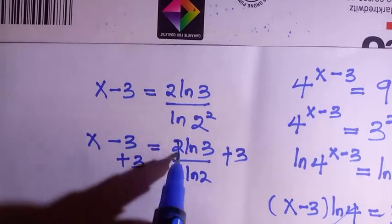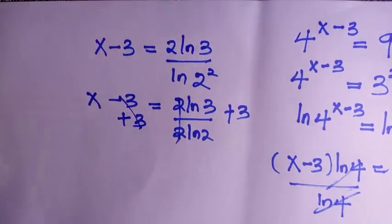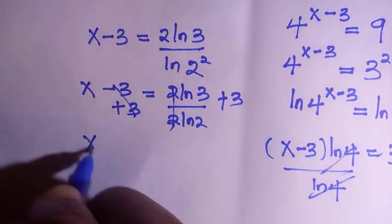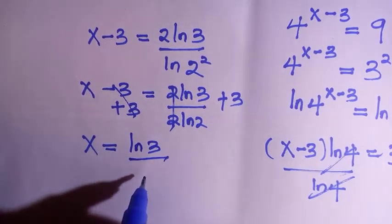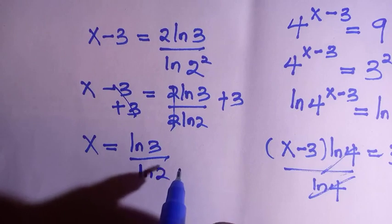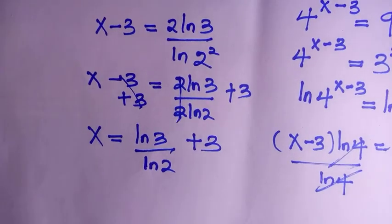So plus 3 minus 3 we cancel, and these two we also cancel. So we have the value of x equals to ln of 3 divided by ln 2 plus 3. And here is how to solve this problem.